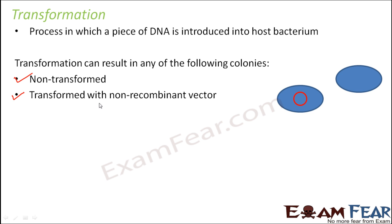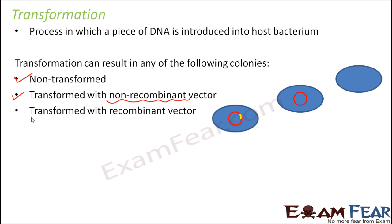The second possibility is transformed with a non-recombinant vector — it underwent a change, but with a non-recombinant vector, meaning no recombination took place. A recombinant vector is a vector — that is, the plasmid DNA — along with the foreign gene containing the gene of interest. So in this case, the vector doesn't have the gene of interest.